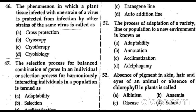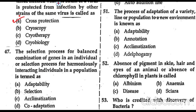Question 46: the phenomenon in which plant tissue infected with one strain of a virus is protected from infection by other strains of the same virus is known as cross protection.